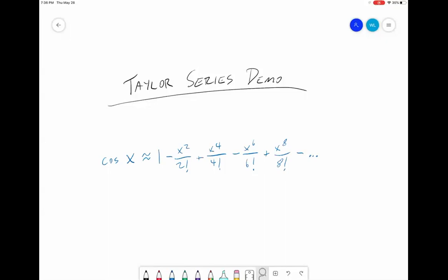So each of these individual terms, 1 minus x squared over 2 factorial plus x to the fourth over 4 factorial, etc., each of these terms is going to refine the Taylor series approximation for the cosine of x. Now I'm going to show you a demonstration using a graph of the cosine of x of how this refinement occurs.